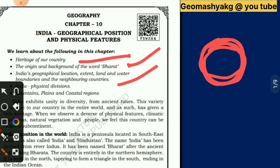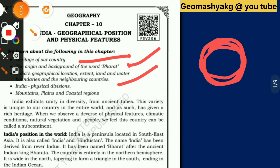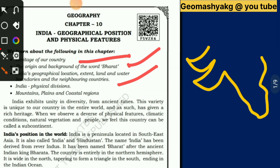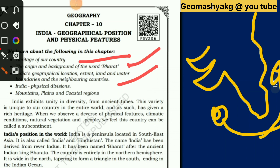Let's learn about India's position in the world. India is a peninsula located in South Asia. A peninsula is a landform surrounded by water in three directions. India is such a landform — from the east it is surrounded by the Bay of Bengal, from the west by the Arabian Sea, and from the south by the Indian Ocean. That's why India is called a peninsula, located in South Asia.